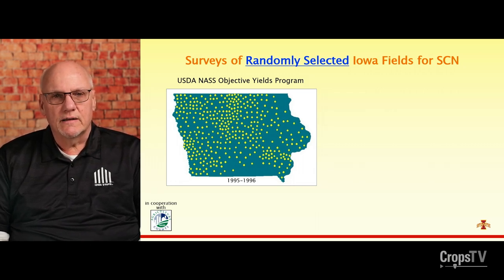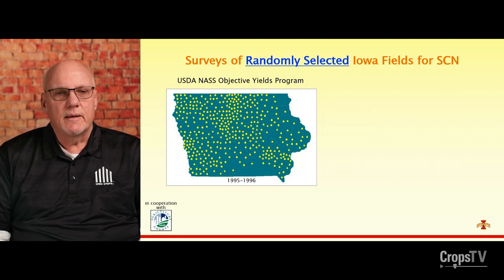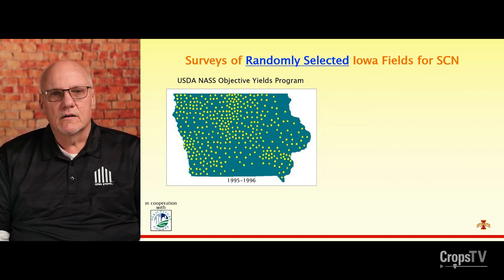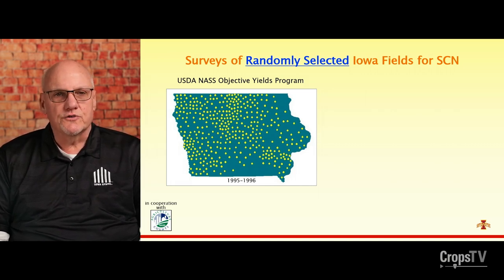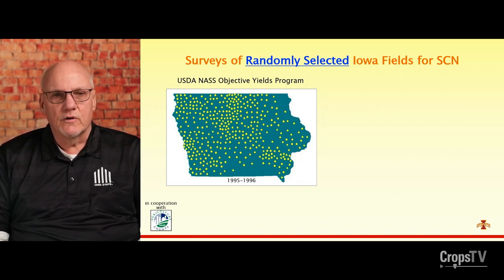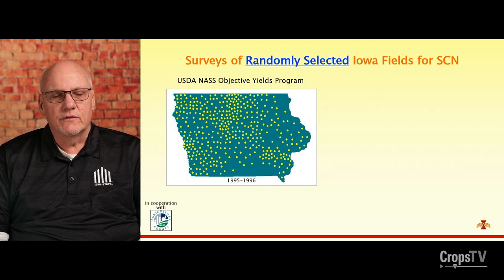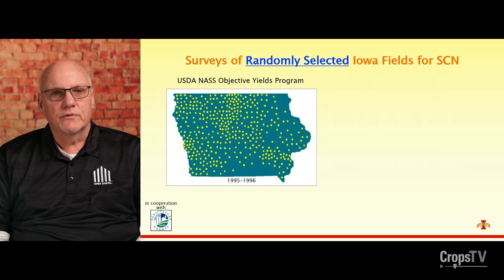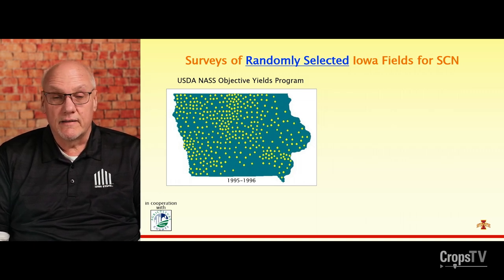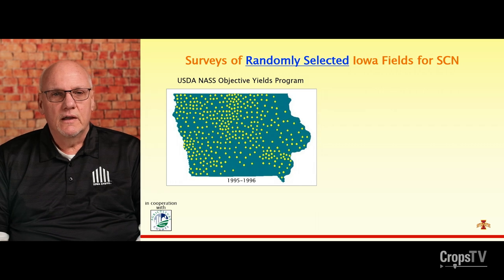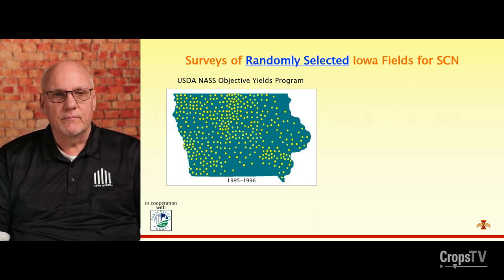The fields were selected based on known areas of soybean production in Iowa. NASS hires enumerators to visit those fields and take plant measurements to estimate crop growth. During the three times I've worked with them, I paid them to collect a soil sample from each randomly selected field, trained them how to collect the samples, and provided soil probes. All samples came back to my laboratory at Iowa State, where we tested for soybean cyst nematode.